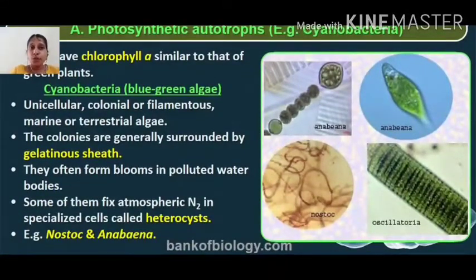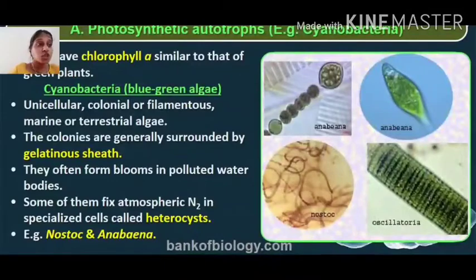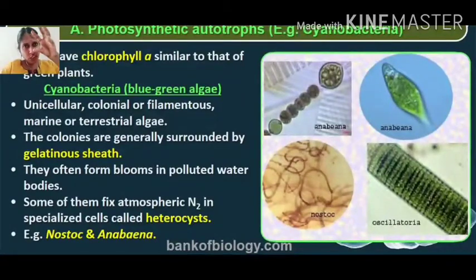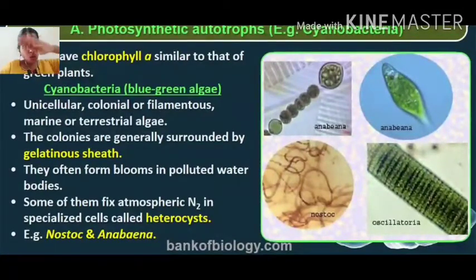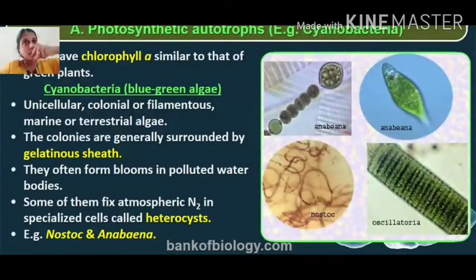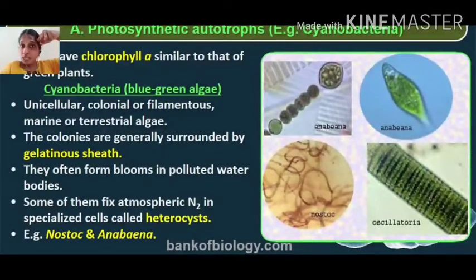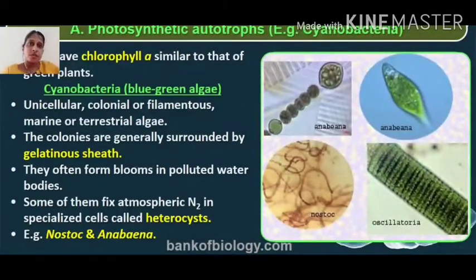Cyanobacteria are commonly called blue-green algae. They can be unicellular, colonial — many cells combined together — or filamentous. In colonial forms, all the cells are enclosed in a gelatinous sheath. They often form blooms in polluted water bodies. Algal bloom occurs when nutrients from fertilizers are washed by rain into water bodies, causing algae to multiply rapidly, eventually covering the entire pond with a green outer layer and disturbing the ecosystem.